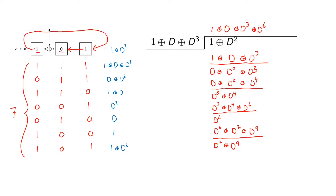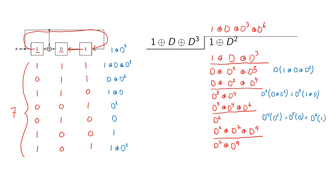Let us compare this to the remainders from our division. The first remainder can be written as D times (1 + D + D²). The next remainder D² + D³ can be written as D² times (D + D²) or as D³ times (1 + D). The next remainder can be written as D⁴ times D², or D⁵ times D, or D⁶ times 1. And the last remainder can be written as D⁷ times D².